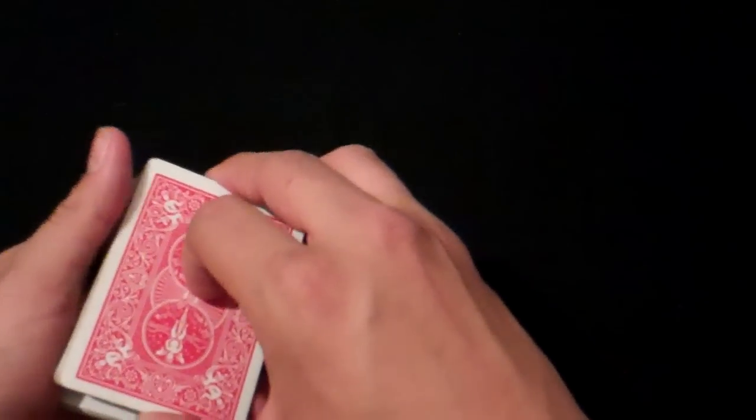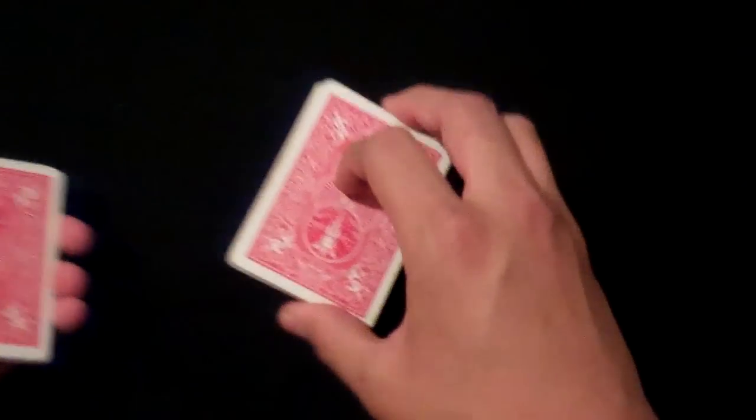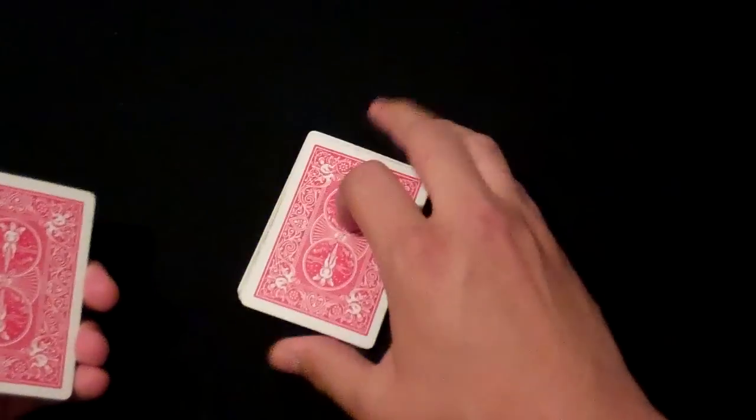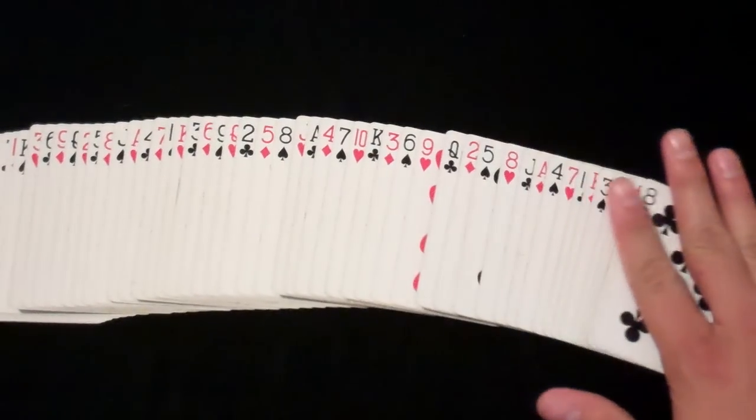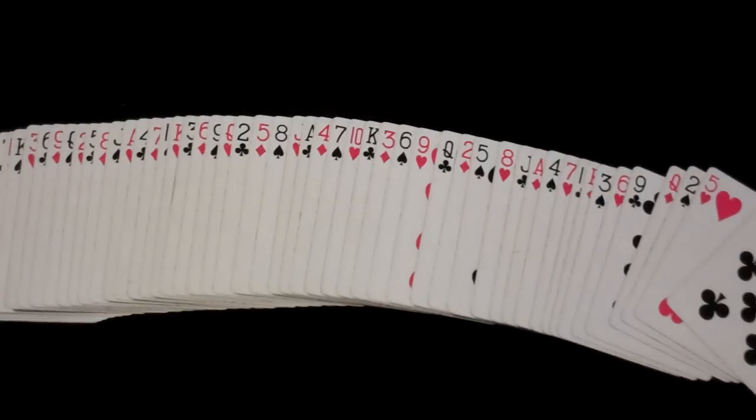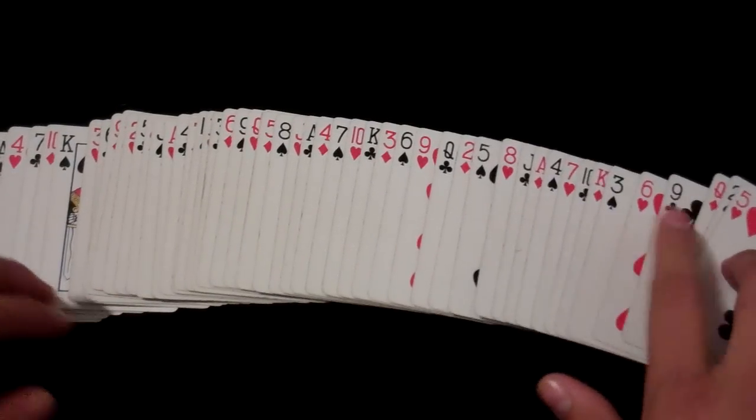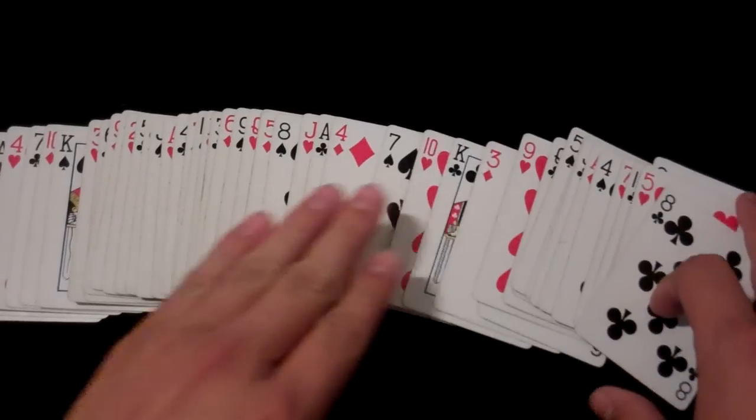So for this trick, we hand the cards to the spectator and tell him to give the cards a few cuts. Now we spread the cards and show them that they are in a random order.